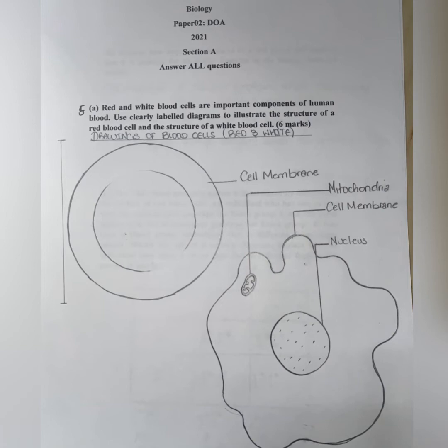So here's my representation of the red blood cell. And I labeled here its cell membrane. Remember, it lacks a nucleus. On the other hand here, I have a white blood cell. White blood cells, they have an irregular shape. As depicted here, my irregular shaped white blood cell with the cell membrane.